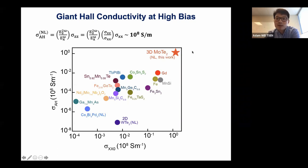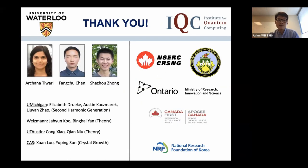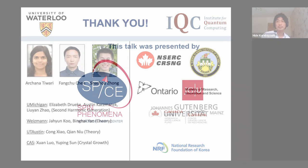As far as I know, this is the highest nonlinear anomalous Hall conductivity that has been measured — although the huge caveat is that this is a nonlinear effect, whereas most of the comparison values are linear effects. I'll end by thanking the people who did this work one more time, as well as you for your attention. Thank you.